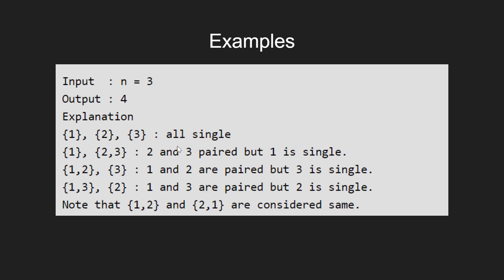Either all remain single, or 2 pairs with 3 and 1 stays single, or 1 pairs with 2 and 3 stays single, or 1 pairs with 3 leaving 2 alone. There are 4 total possible ways, giving us output 4.